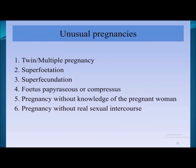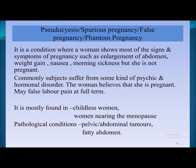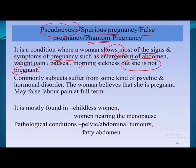There are cases of unusual pregnancies such as queen pregnancy, multiple pregnancy, superfecundity, superfetation, fetal papyraceous, pregnancy without knowledge of the woman, and pregnancy without real sexual intercourse. Pseudocyesis — also called spurious, false, or phantom pregnancy — is a condition where a woman shows most signs and symptoms of pregnancy such as abdominal enlargement, weight gain, and morning sickness, but is actually not pregnant.